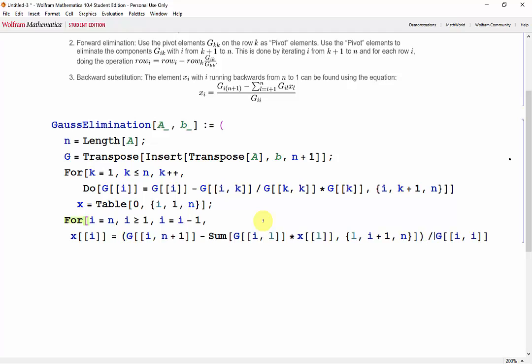Close that round bracket, and don't forget our semicolon. And finally, we want our output to be X. Shift-Enter to initiate the function.